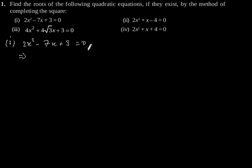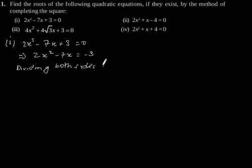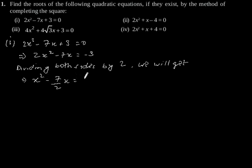Shifting 3 to the right hand side: 2x squared minus 7x is equal to minus 3. Now, dividing both sides by 2, we get x squared minus 7 by 2 times x equals minus 3 by 2, which implies x squared minus 2x times 7 by 4 is equal to minus 3 by 2.